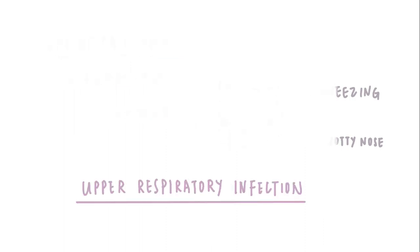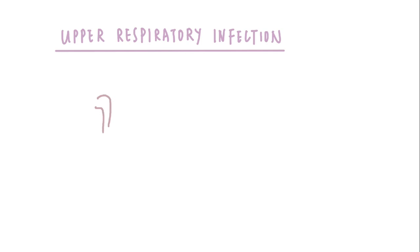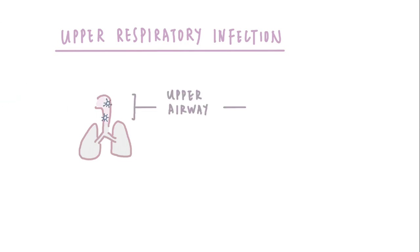What exactly is the upper respiratory infection? Upper respiratory infection basically is just having germs in the upper part of the cat's breathing system. By the upper part, we mean the upper airway, which includes the nose, the throat, and the sinuses, rather than the lungs.